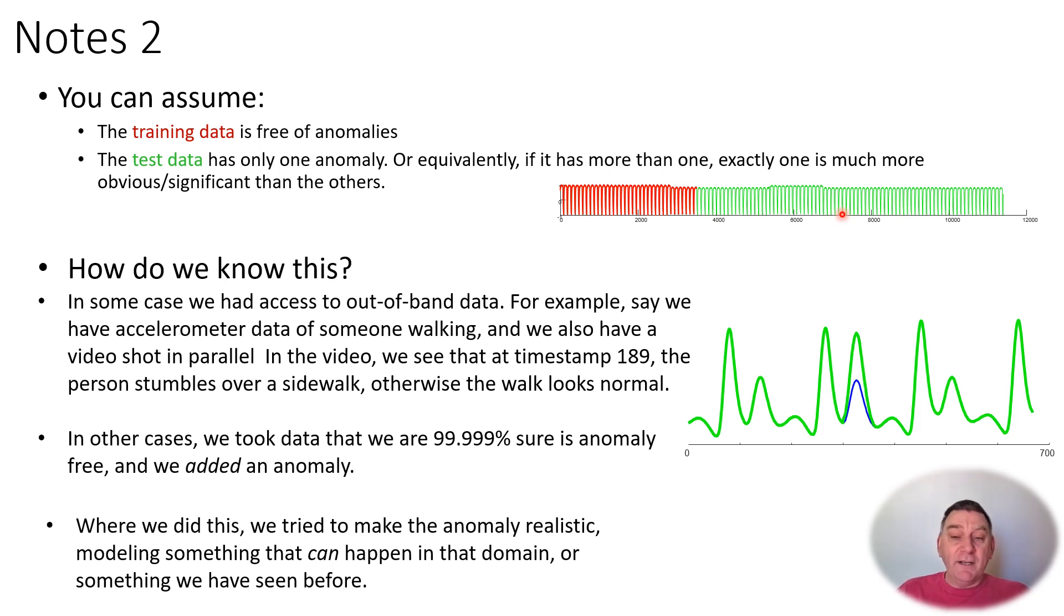You may want to know how can we actually tell this? Well, there's two possible ways. In some cases, we had access to out-of-band data. For example, you might imagine we had an accelerometer placed on a person's leg and made them walk around while we videotaped this. On the videotape, we can see, for example, the person stumble, and using that timestamp, we can actually brush that onto the time series and say that was an anomaly.